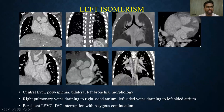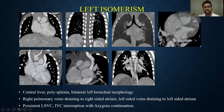Coming to the left isomerism case: the liver was centrally located with multiple lobulated spleens indicating polysplenia, and the bronchi showed bilateral left-sided morphology with bilobed lungs. The right-sided veins drained into the right atrium and the left pulmonary veins drained into the left atrium. This patient also had a persistent left superior vena cava and IVC interruption with azygous continuation of IVC.